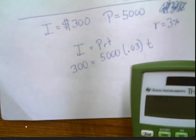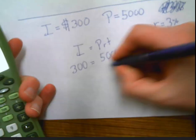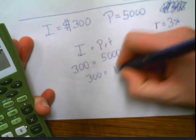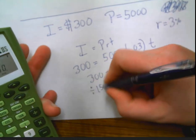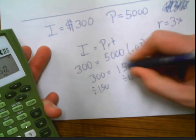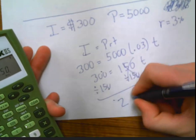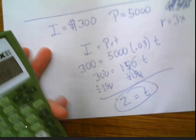So I do 5,000 times .03. That gives me 150. Divide both sides by 150. And I get, if you divide 300 by 150 is 2, the time is 2 years.